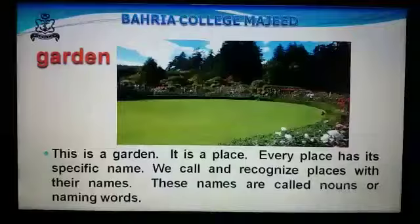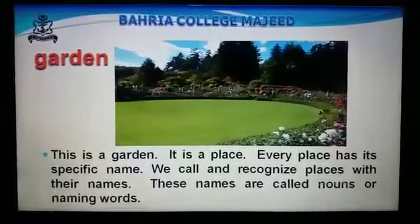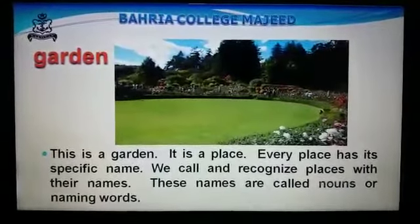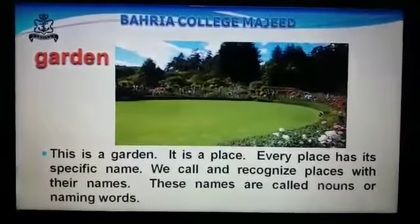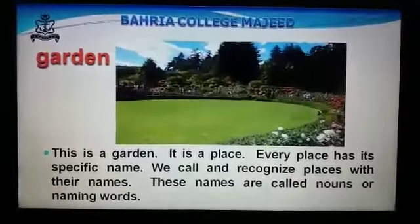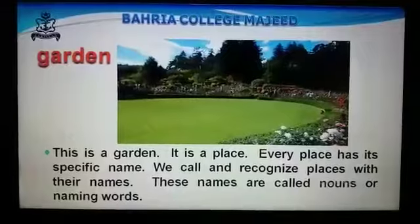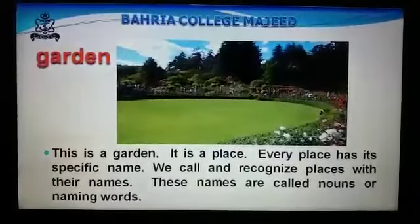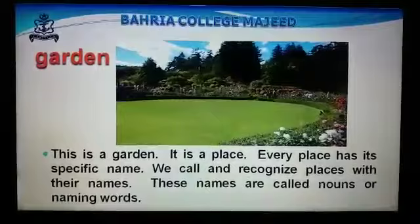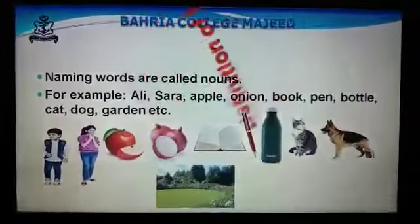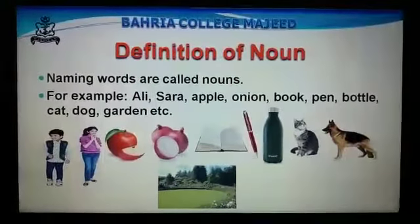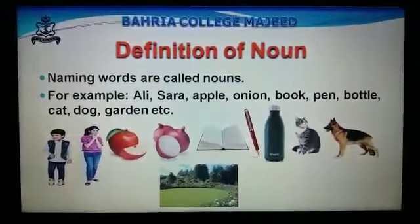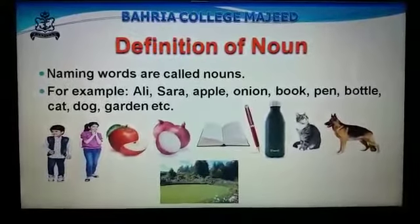It is a picture of a garden. It is a place. Every place has its specific name. We call and recognize places with their names. These names are called nouns or naming words. Definition of noun: naming words are called nouns.